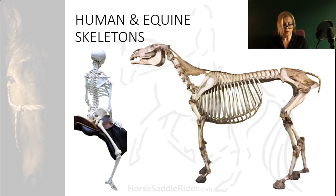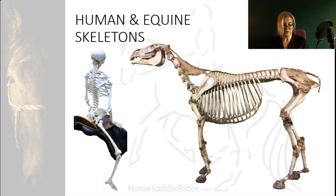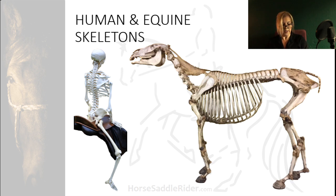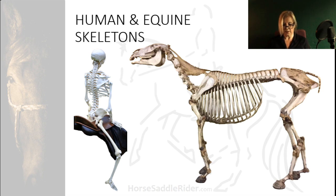The horse, rider and saddle load can easily inhibit fluent movement during the respective combined interaction of all three. In the next presentation we will take a closer look at various components of the skeleton.